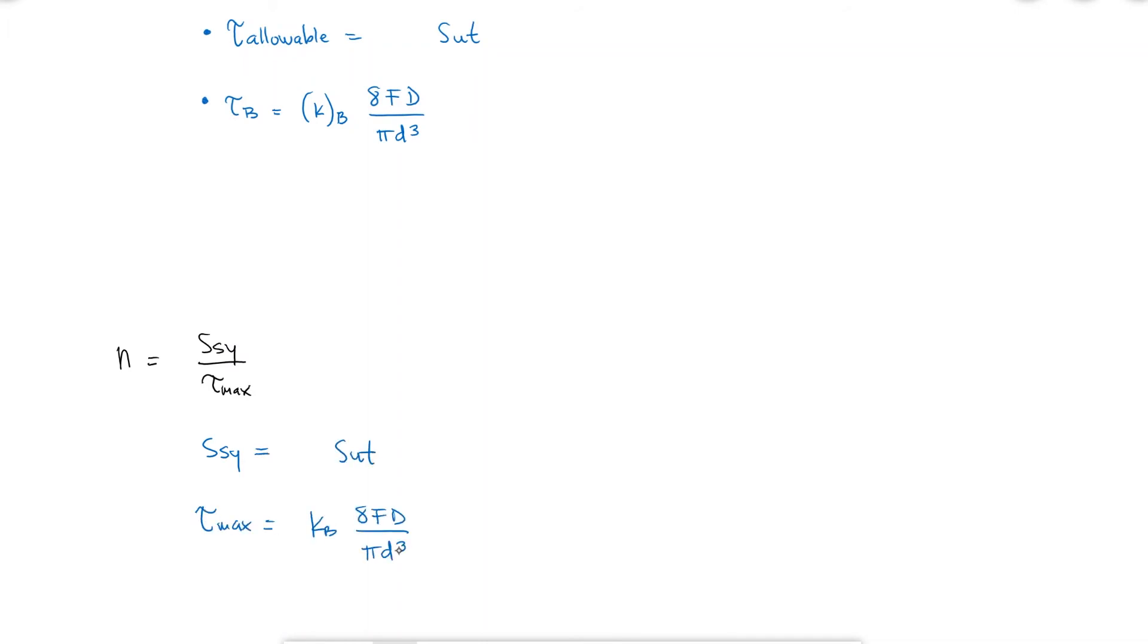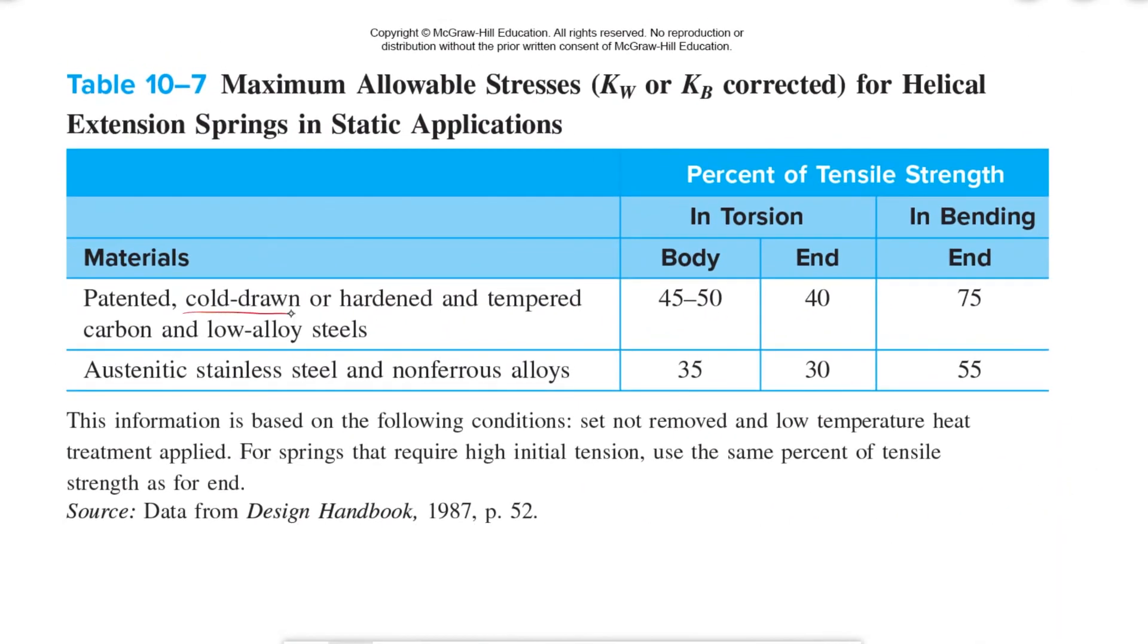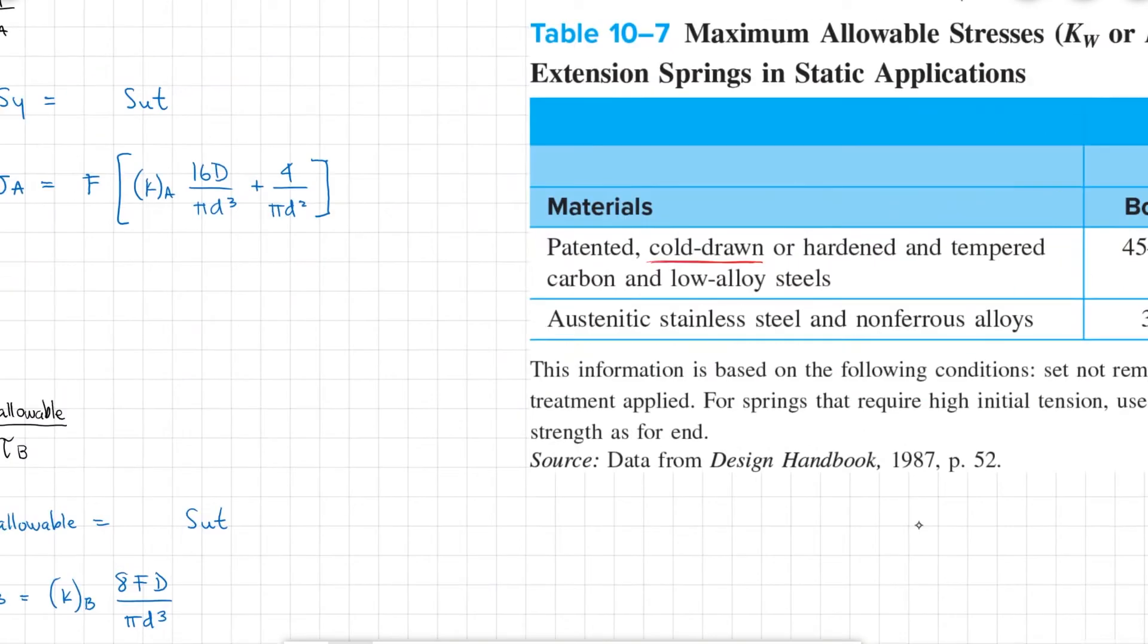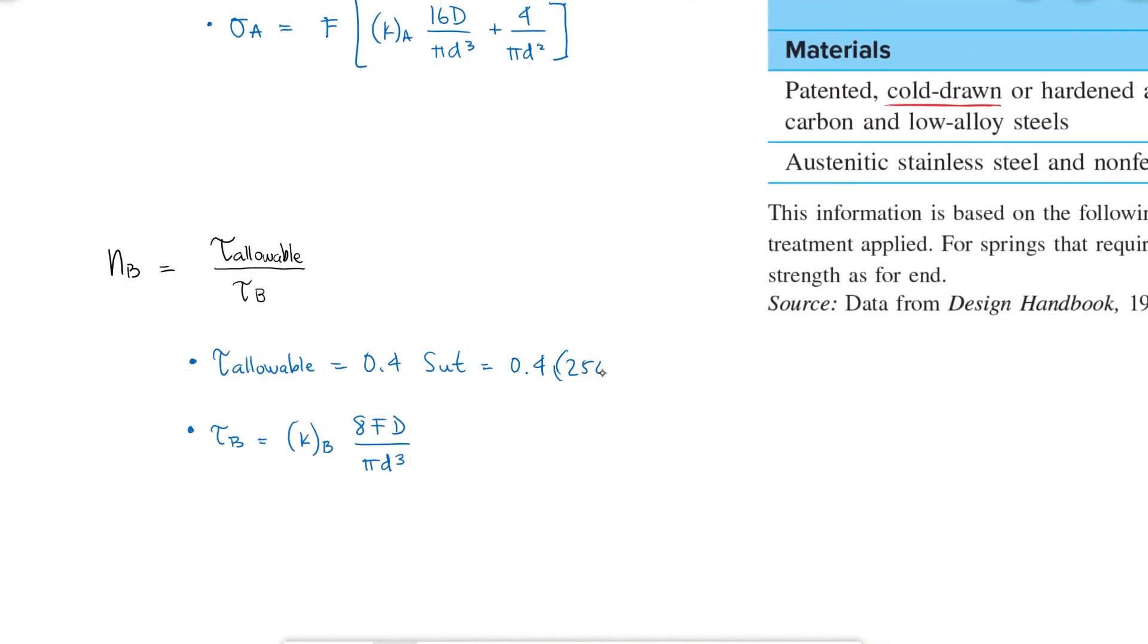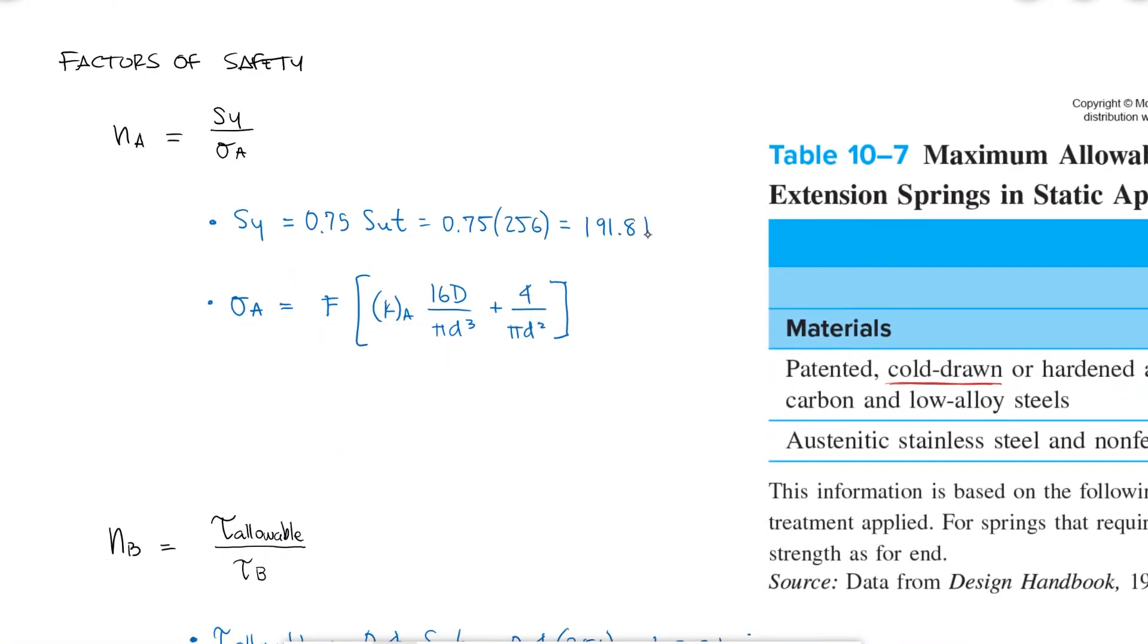Since all of the yield strengths are a fraction of the tensile strength SUT, I also need to calculate that. For hard drawn wire, we've looked up these coefficients several times. The shearing yield strength we've also used several times for a spring without a preset or before set removed, and that's 45%. For the torsion yield strength, for the stress at the hook, we find that it is equal to 40% the tensile strength, which results in a maximum allowable shearing stress of 102.3 KSI. And for the tensile yield strength, I find the 75% of the tensile strength, which results in 191.8 KSI.